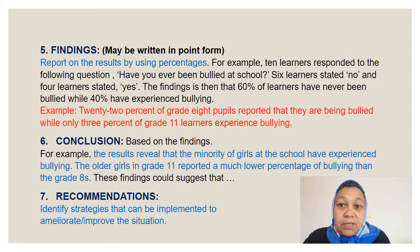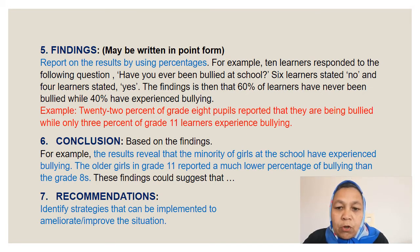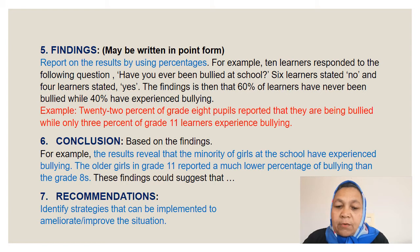Now that you have collected and analyzed your information, you write your 'Findings'. Here you report on the results by using percentages. For example, if you handed out a survey and asked 10 learners whether they had been bullied at school, and 6 said no and 4 said yes, then 4 out of 10 is 40% and 6 out of 10 is 60%. That is how you draw your conclusions regarding percentages.